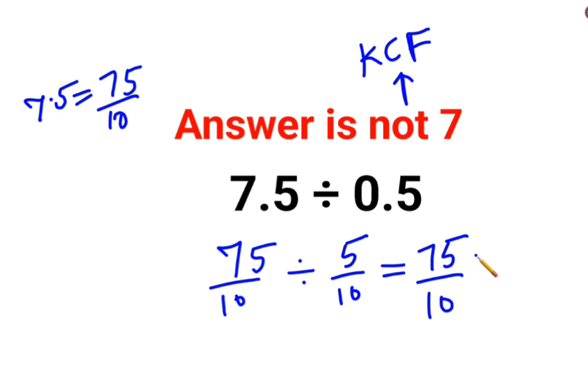C stands for changing the division sign to multiplication. Now since you have changed the sign, there has to be some major change happening, right?